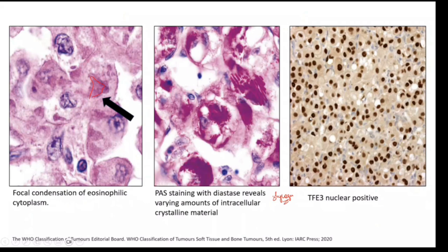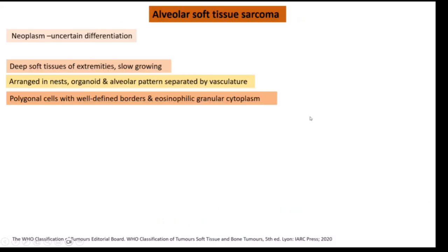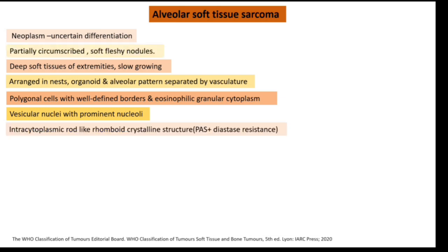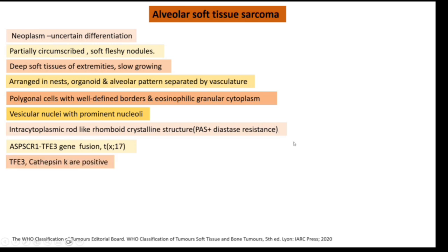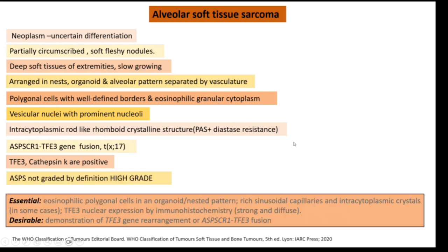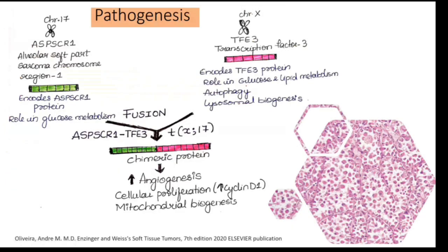The tumor cells are polygonal in shape with well-defined borders, eosinophilic granular cytoplasm, vesicular nucleus, and prominent nucleoli. There are also rhomboid crystals which are PAS positive and diastase resistant. This tumor has an ASPCR1 and TFE3 fusion.